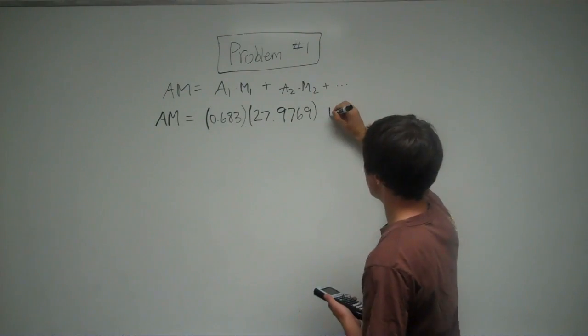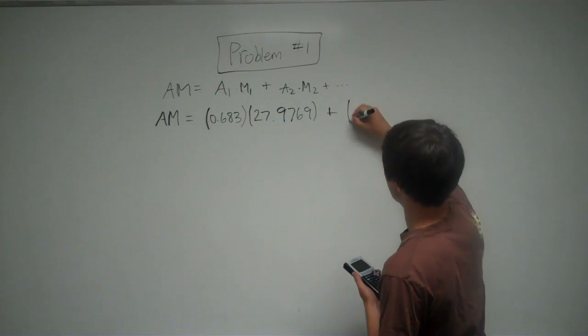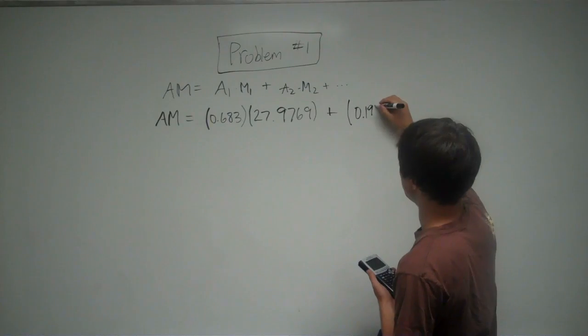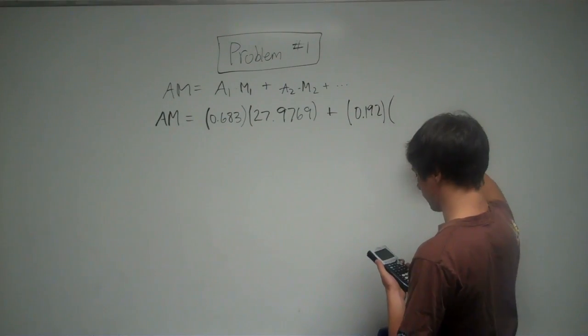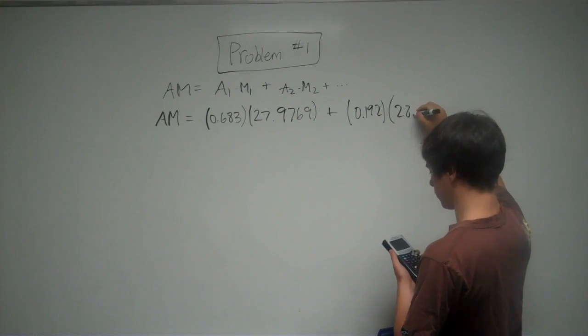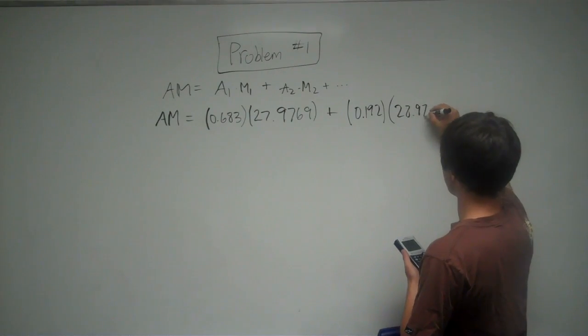Then the next one is the abundance of number 2, so 0.192 times the mass of number 2, which is 28.9765.